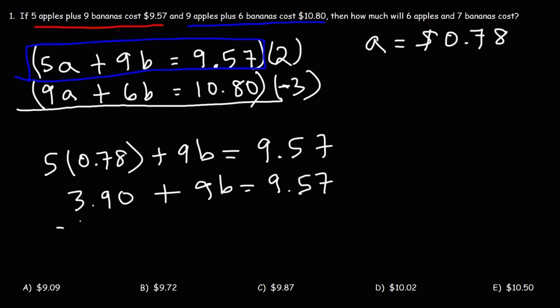Now, our next step is to subtract both sides by 3.9. So we're going to get 9B is equal to, now let's subtract 9.57 by 3.9. And this will give us 5.67.